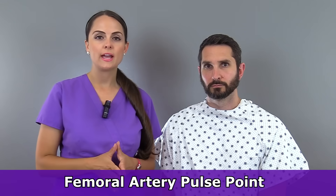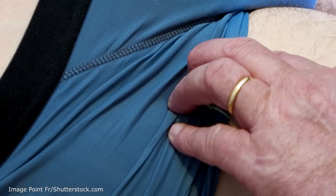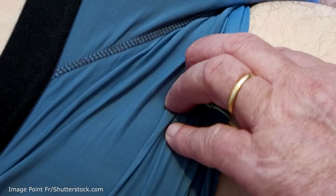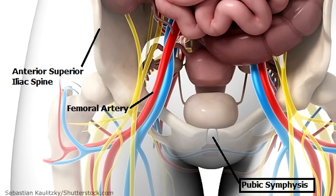Next, we're going to find the femoral pulse point. This is a major artery in the groin that provides circulation to the legs. To feel this artery, you have to palpate deeply in the groin area. It is found below the inguinal ligament and between the pubic symphysis and the anterior superior iliac spine.